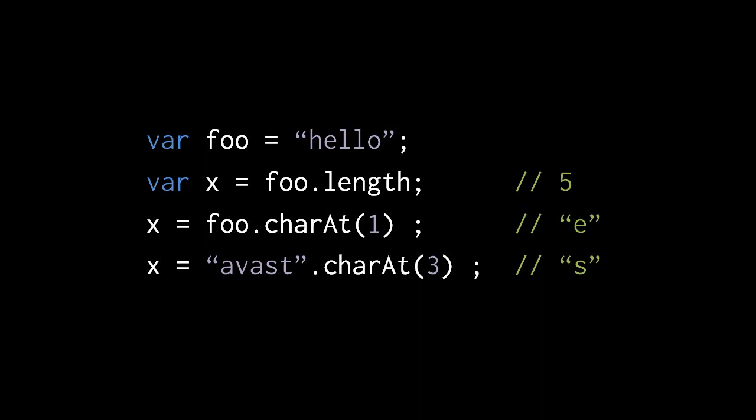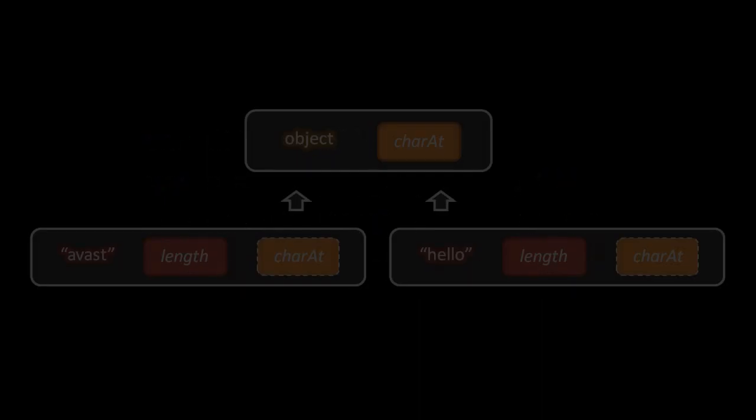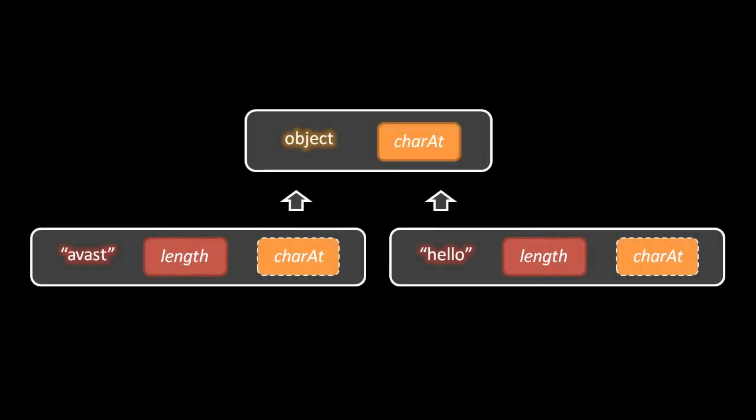To illustrate this scenario: we have two string objects, one reading 'a vast' and one reading 'hello'. Each has its own property named length, and that's the only property they have individually. The individual strings, though, are linked to this one shared object which has methods for dealing with strings, including charAt and others.